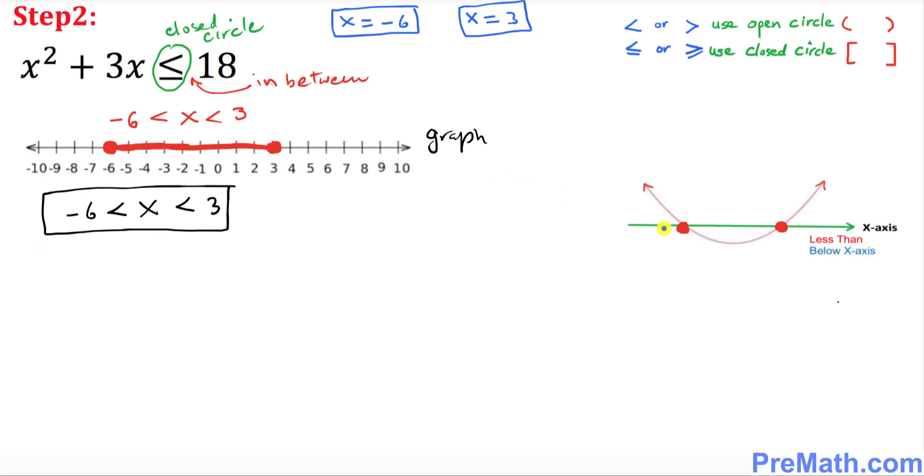Since over here you can see this is our x axis and this graph represents our quadratic function. And since over here just look at over here, I want you to focus on this inequality which is less than.